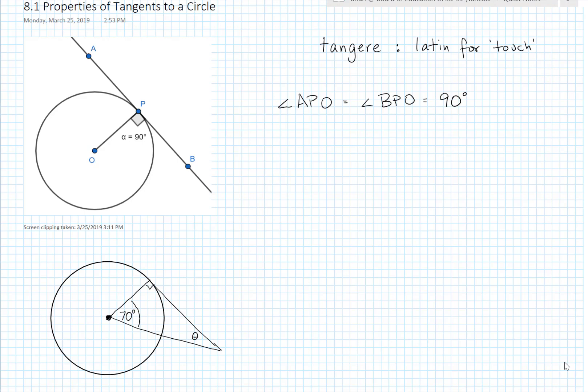And this is a fundamental property of tangents to a circle. They always form an angle of 90 degrees, or a right angle, with the radius of the circle when you draw the radius from the center of the circle to the point of tangency.